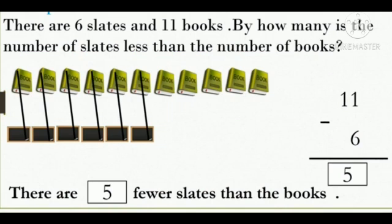Next example. There are 6 slates and 11 books. By how many is the number of slates less than the number of books? Children, what can you see in the picture? They have given us the picture of books and slates. Tell me how many books are there? Very good. 11 books. How many slates are there? Very good. 6. Before we start subtracting, we need to make pairs.